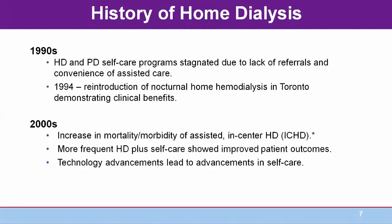The 1990s saw the proliferation of freestanding in-center hemodialysis units for assisted dialysis, with the result that self-care dialysis numbers stagnated due to the lack of nephrology referrals and nursing expertise. In the late 1990s and early 2000s, the high morbidity and mortality of in-center hemodialysis compared to other first-world countries led the U.S. to focus increased attention on contributing factors. Research, such as the reintroduction of nocturnal home hemodialysis and daily hemodialysis in Toronto, demonstrated significant clinical benefits.